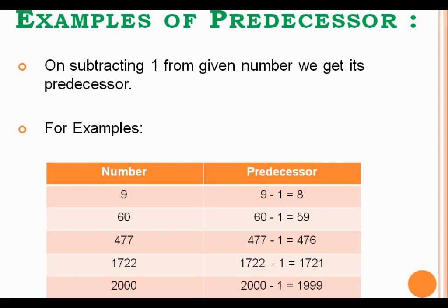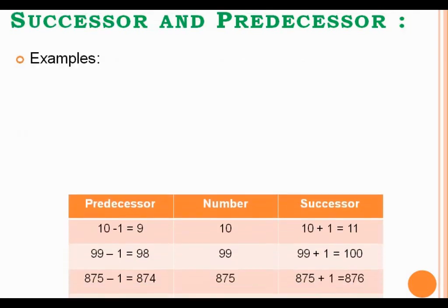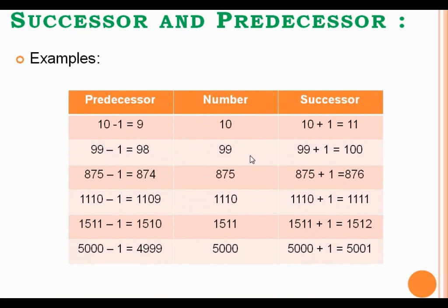Let's see some more examples of successor and predecessor together. Suppose you want to find out the successor and predecessor of the given number 10. For finding out the successor, you have to just add 1 to the given number. And for finding out the predecessor, you have to just subtract 1 from the given number, and you will get both the successor and predecessor.